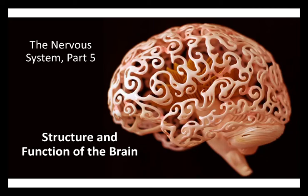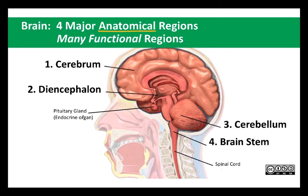Welcome to part five of our six-part series of lectures on the nervous system. In this video, we're going to look at the structure and function of some regions of the brain. There are four major anatomical areas in the human brain, four major structural areas, but many different functional regions. By looking at patterns of brain damage in people who have traumatic injuries or stroke, and by electrical recordings from the brain, we know that different parts of the brain have different functions.